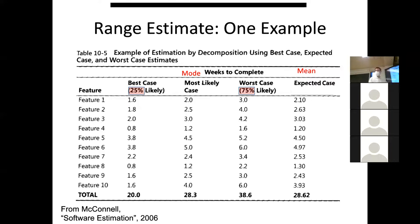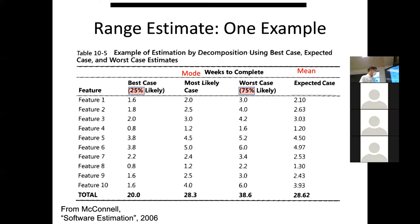Next time, we'll also talk about how it's not quite legitimate to simply total up the best cases — assuming you get the best case on feature one AND feature two AND feature three AND feature four AND feature five. That's kind of unlikely. It's like rolling dice and getting a six every single time — extremely unlikely. But it's also unlikely you get the worst case every time. So we have to deal with that. That's for next time.